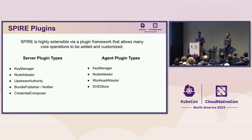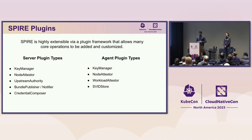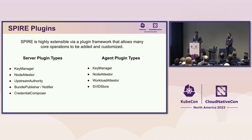Another important plugin type is the workload attester plugin, which is an agent plugin. It allows the agent to find selector information for a specific workload. An example is the Kubernetes workload attester plugin, which queries the kubelet to fetch information about the pod — such as namespace, pod labels, service account, etc. — and uses it to generate selector information.